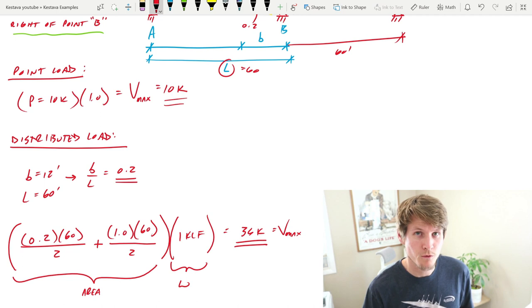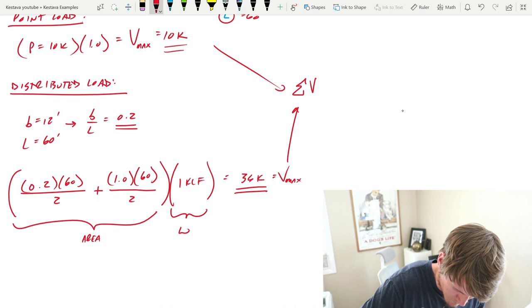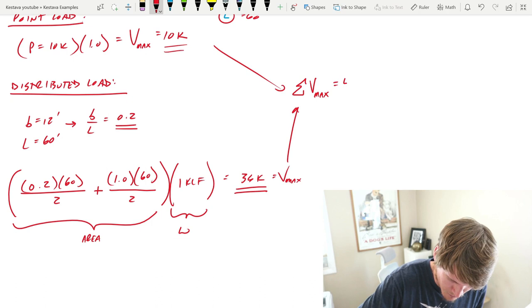Now, if I get my head out of the way, you could combine both of these to get summation of V max to the right of point B is equal to both of those added up, which is 46 kips.